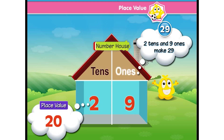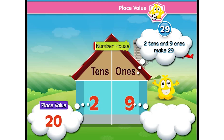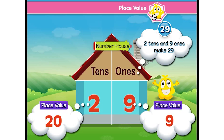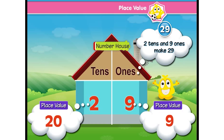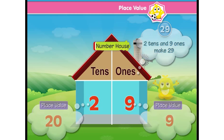But the number in the ones place is the leader, so its place value is written as it is. So in the number 29, the place value of 2 is 20, and the place value of 9 is 9.